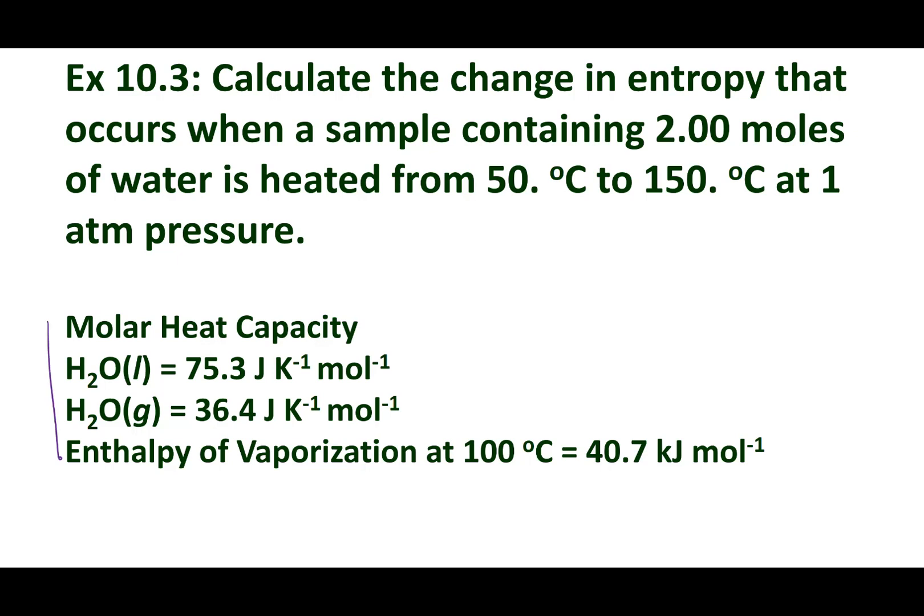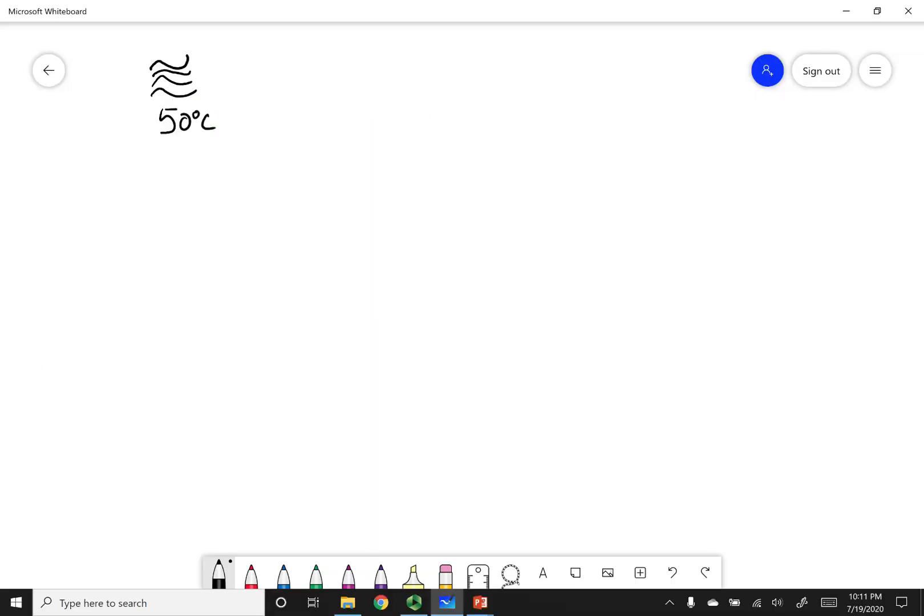Here's the premise of the problem. Here's some thermodynamic data. And what I want you guys to do is mark the right answer after you finish doing this problem. So let's map out what this problem is trying to do. I'm going to start out with water at 50 degrees. And what I want to do is take it to steam at 150 degrees. And I'm doing this at constant pressure at 1 atm.